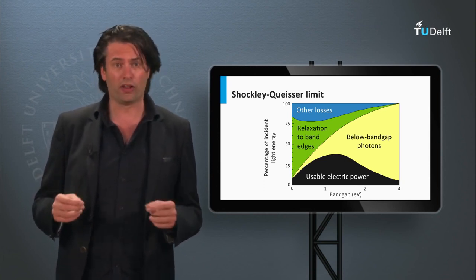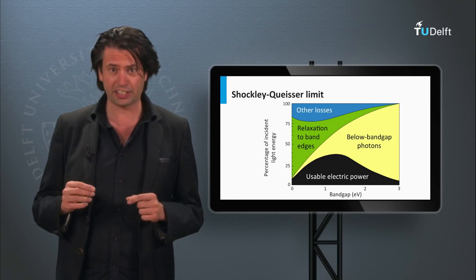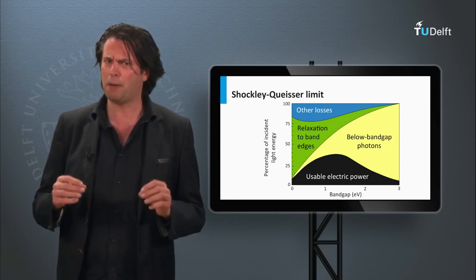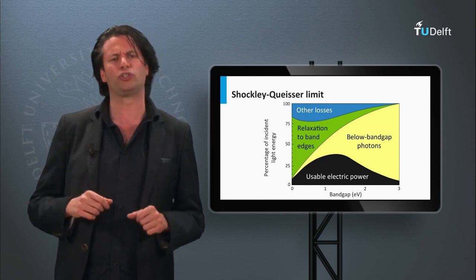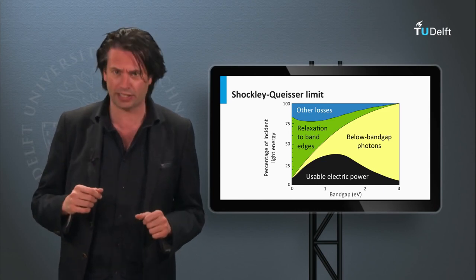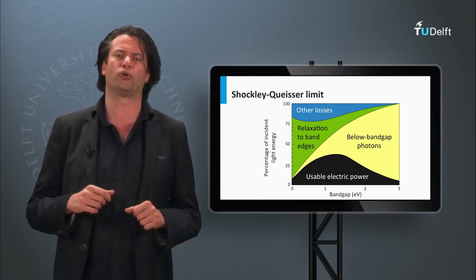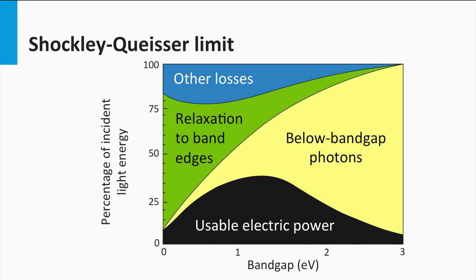As discussed in week 1, third generation technology is technology based on concepts which are able to surpass the so-called Shockley-Queisser limit of a single junction solar cell. The Shockley-Queisser limit, as discussed in week 3, is a kind of thermodynamic approach to estimate the maximum performance of a single junction solar cell. The AM1.5 spectrum is incident on a solar cell.